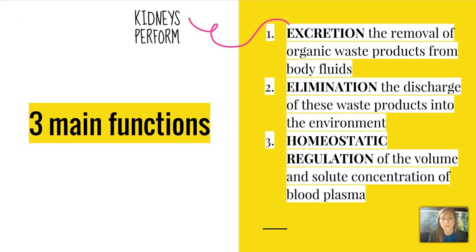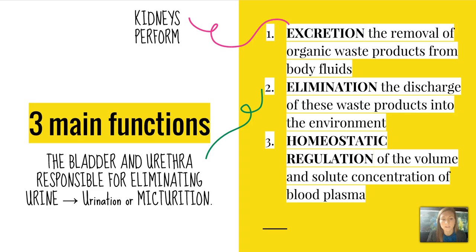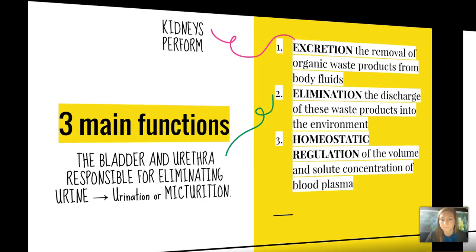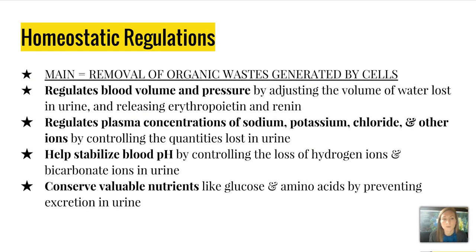The kidneys perform the excretion part — the removal of organic waste from body fluids. Elimination is done by the bladder and the urethra through urination or micturition. Homeostatic regulation removes organic waste generated by cells, but also regulates blood volume and pressure, plasma concentrations of sodium, potassium, chloride, and other ions, helps stabilize blood pH, and conserves valuable nutrients.